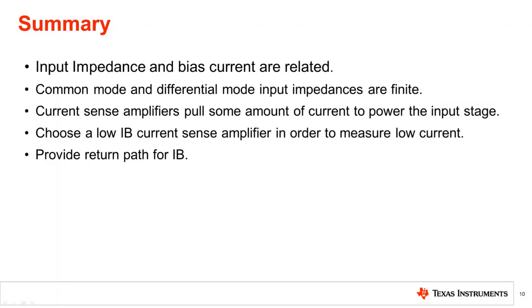Let's take a minute to summarize what we learned in this video. Input impedance and bias current are related. Common mode and differential mode input impedances are finite. Current sense amplifiers pull some amount of current to power the input stage. Choose a low IB current sense amplifier in order to measure low current. Provide return path for IB.